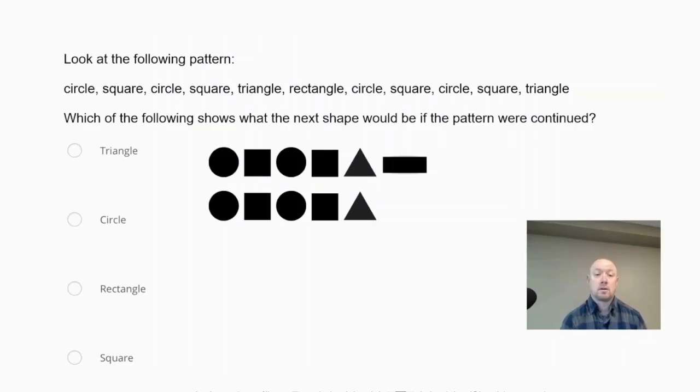Look at the following pattern: circle, square, circle, square, triangle, rectangle, circle, square, circle, square, triangle. Which of the following shows what the next shape would be if the pattern were continued?